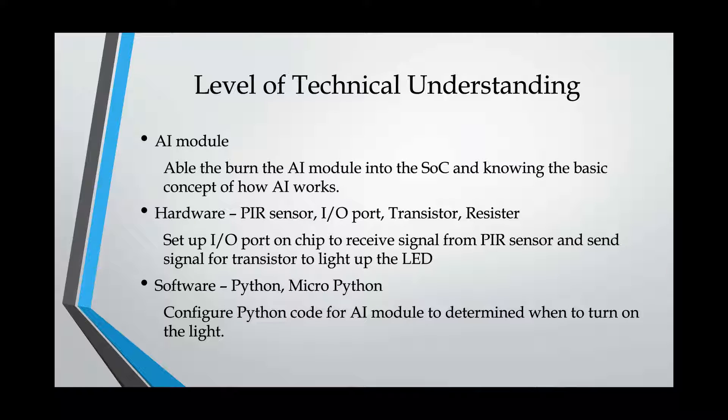And here is the level of technical understanding. I am going to break this part into three parts. The first one is the AI. The second one is the hardware. And the third one is the software. For the AI, we are able to burn the AI module into the system on chip. The system on chip we are going to use is K210 and we will talk about it later. And because of the early searching, we know we have a basic knowledge of how AI works and how AI human detection works.